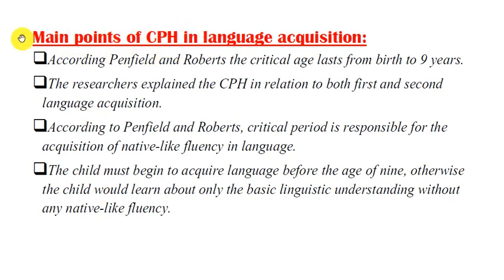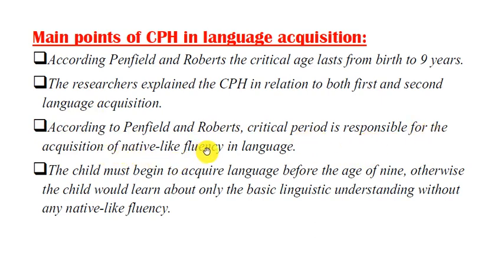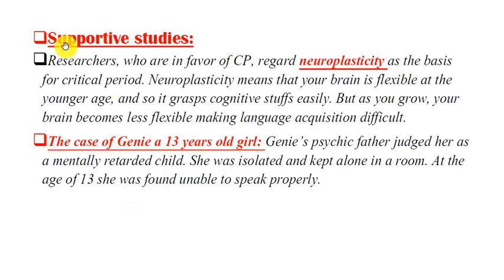Here are some of the main points of critical period hypothesis and language acquisition. According to Penfield and Roberts, the critical age lasts from birth to nine years. They explain the critical period hypothesis in relation to both first and second language acquisition. The critical period is responsible for the acquisition of native-like fluency in a language. The child must begin to acquire language before the age of nine, otherwise the child would learn only the basic linguistic understanding without any native-like fluency.